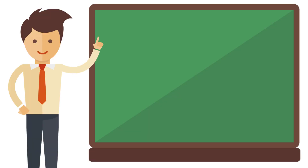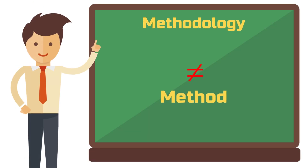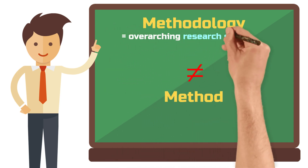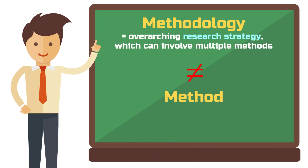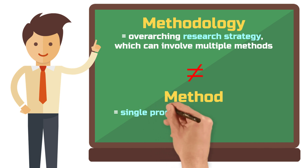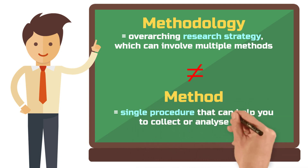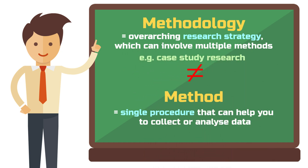A very common mistake is to confuse the concepts methodology and method. A methodology describes an overarching research strategy which can involve multiple methods. An empirical method is a single procedure that can help you collect or analyze data. An example of a methodology would be a case study, and under the umbrella of this methodology you can apply qualitative methods, for example.